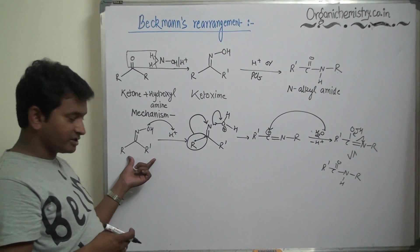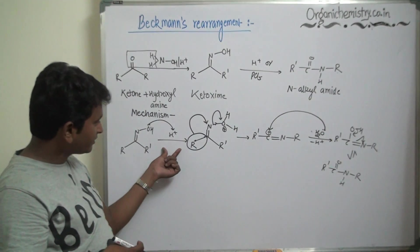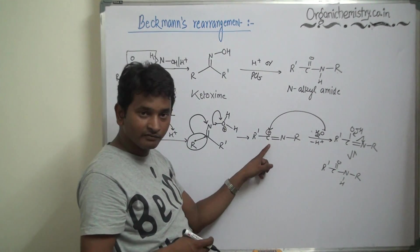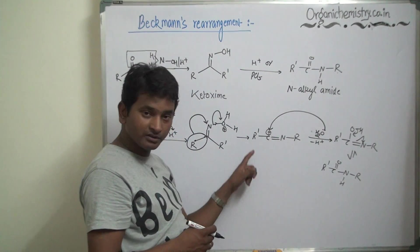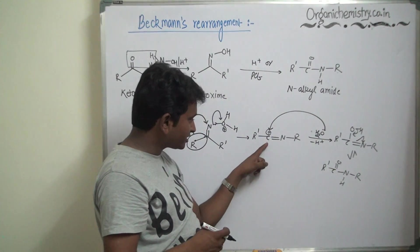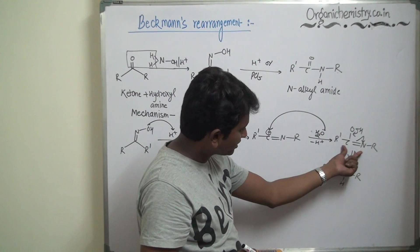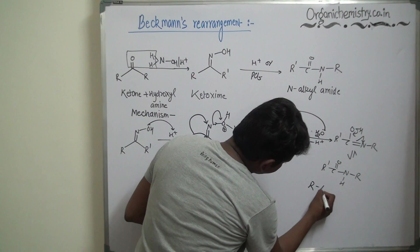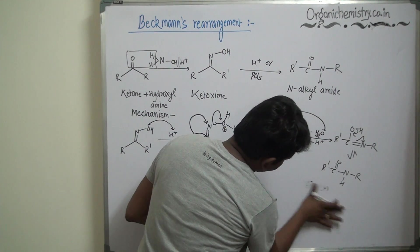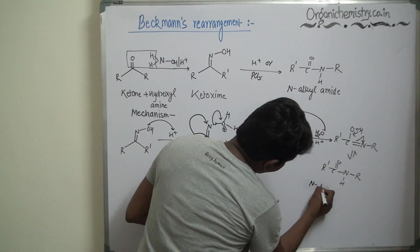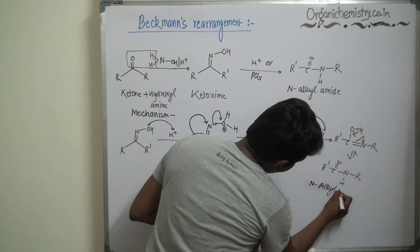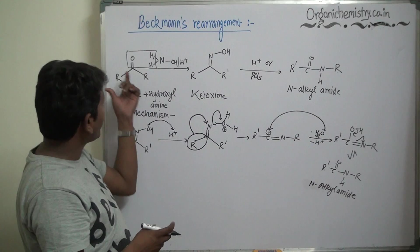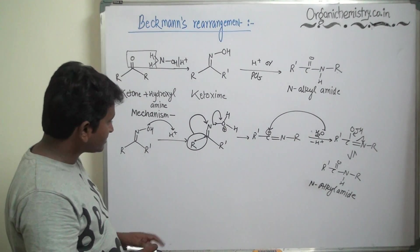This ketoxime on treatment with acid first forms this compound, loses water molecule to give carbocation which is resonance stabilized, then water attacks over this carbocation to form this type of compound which is later tautomerized to give final R-substituted amide or simply N-alkyl amide. This reaction is called as Beckmann's rearrangement.